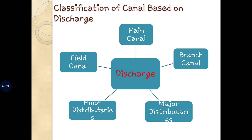Next are major distributaries. These distributaries receive water either from the main canal or from the branch canal. These canals discharge water in the range of 0.15 to 5 cubic meters per second. They are used to supply water from the outlet to the agriculture fields directly, and sometimes the major distributaries also supply water to the minor distributaries.